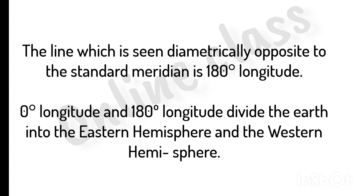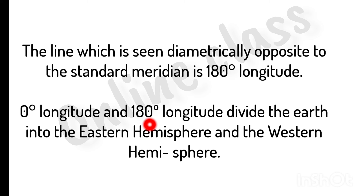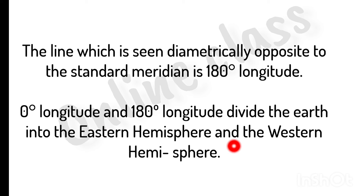The line which is seen diametrically opposite to the standard meridian is 180 degree longitude. 0 degree longitude and 180 degree longitude divide the earth into the eastern hemisphere and western hemisphere.